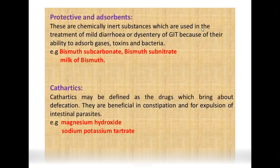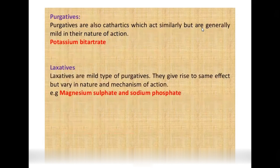Cathartics are drugs that promote defecation, useful in constipation and intestinal parasites. Examples include magnesium hydroxide, sodium and potassium tartrate. Purgatives are similar to cathartics but generally milder. Laxatives are mild purgatives — all three (cathartics, purgatives, laxatives) produce a similar effect but vary in nature and severity. Examples: magnesium sulfate, sodium phosphate.